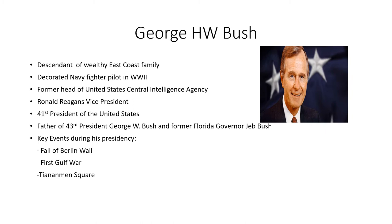George H.W. Bush served as President Reagan's vice president during his two administrations. He is a descendant of a wealthy East Coast family who moved to Texas and got started in the oil business. During World War II he was a decorated Navy fighter pilot who got shot down during combat in the Pacific. He was also the former head of the United States Central Intelligence Agency, and he became the 41st president of the United States. He is the patriarch of a very influential family — his son George W. Bush was the 43rd president, and another son, Jeb Bush, was a former governor of Florida. Key events during his presidency included the fall of the Berlin Wall, the first Gulf War, and the Tiananmen Square democracy demonstration in China.